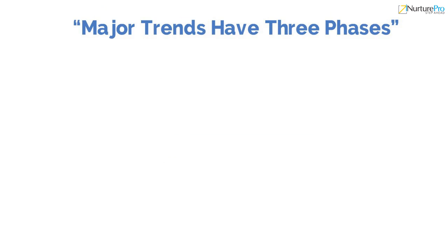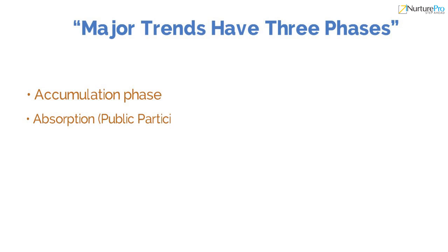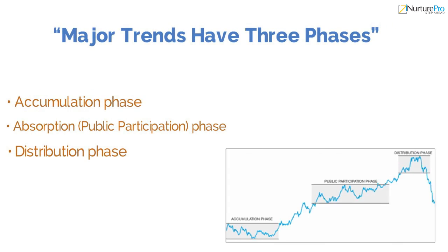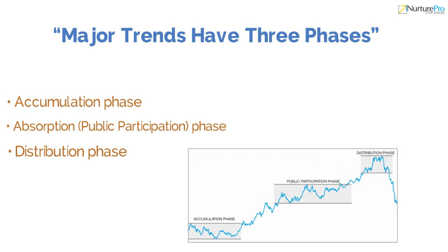Now let's study the third tenet: major trends have three phases. Every primary trend consists of three phases — the accumulation phase, the absorption phase, and the distribution phase. During the accumulation phase, investors start entering the market. It happens at the very end of a downtrend and the price is at the most attractive level. However, it is one of the difficult phases to spot.